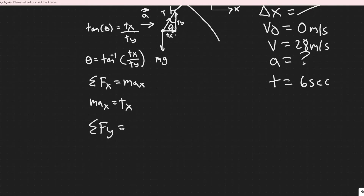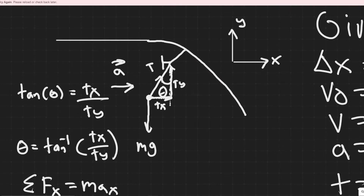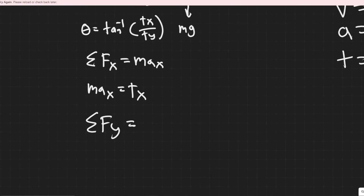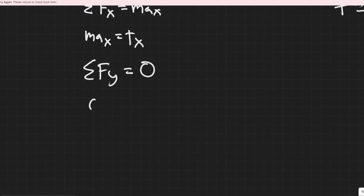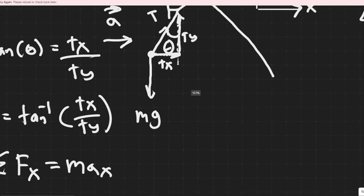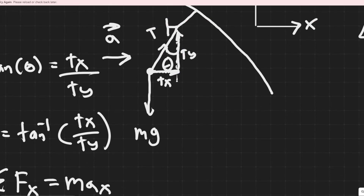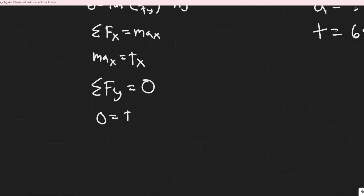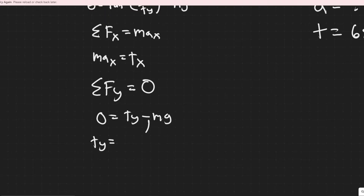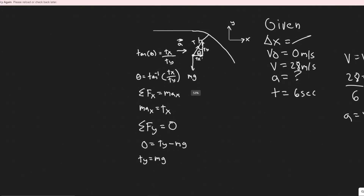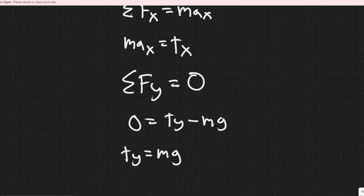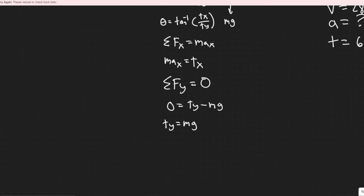Summing the forces in the y direction: we're not accelerating in y, so ΣFy = 0. Our two forces are mg downward and t sub y upward. Choosing up as positive: t sub y − mg = 0, which means t sub y = mg.